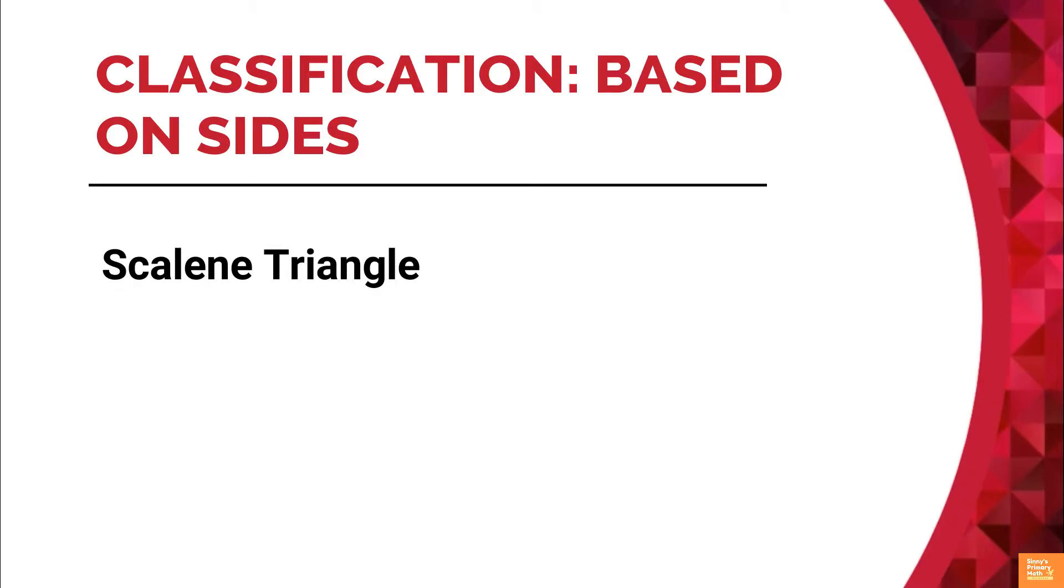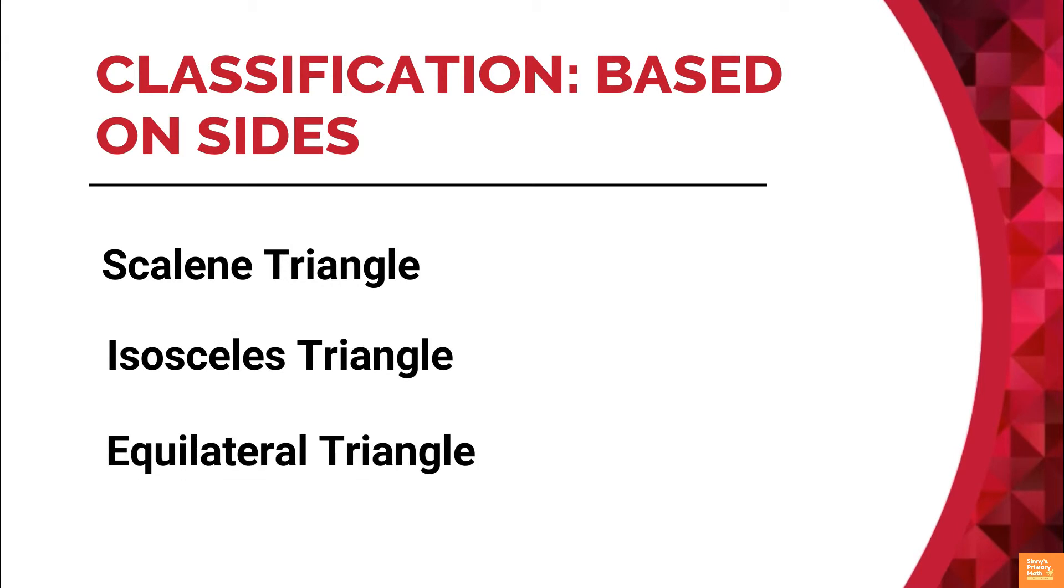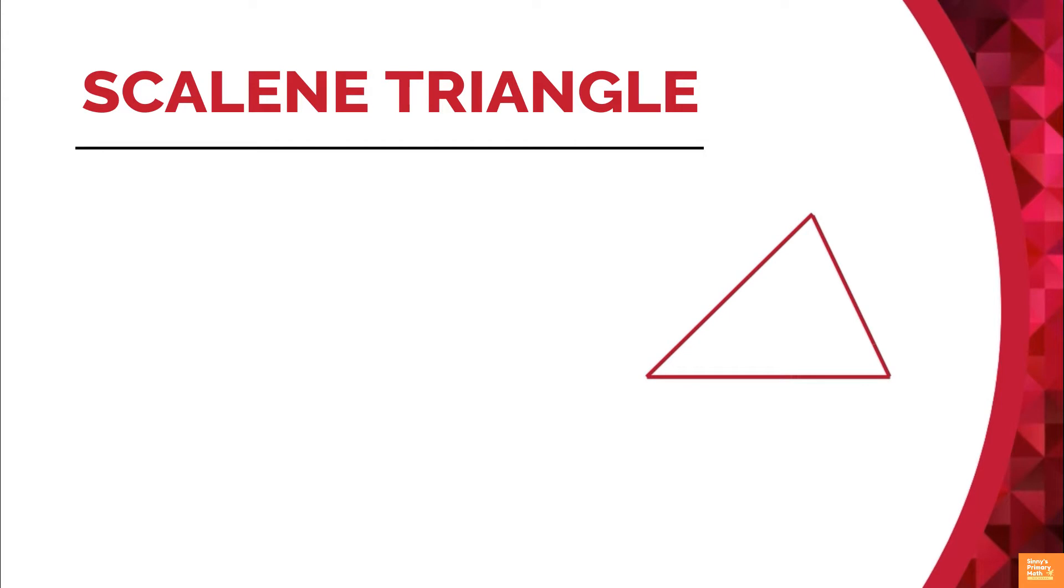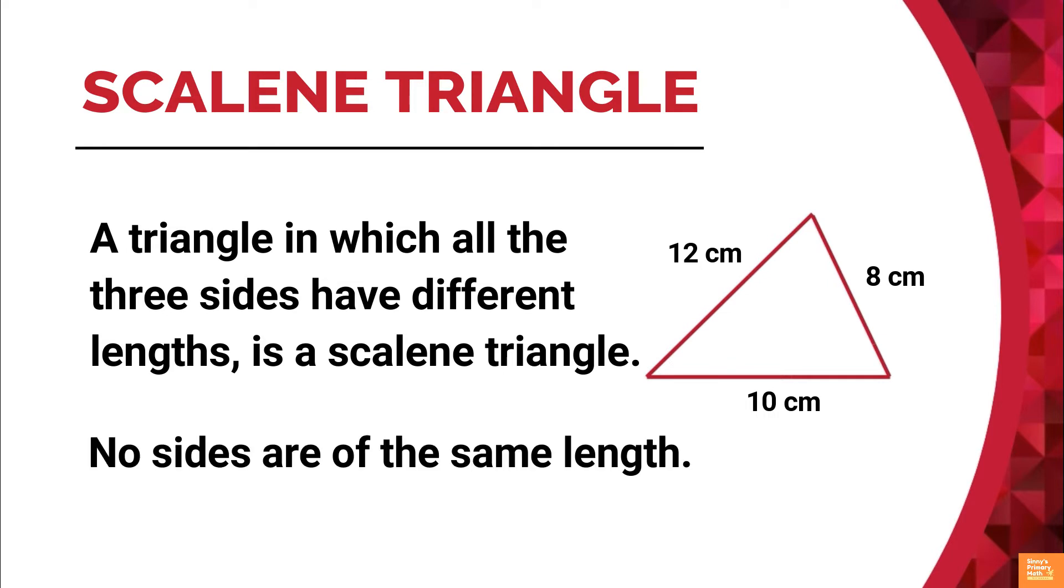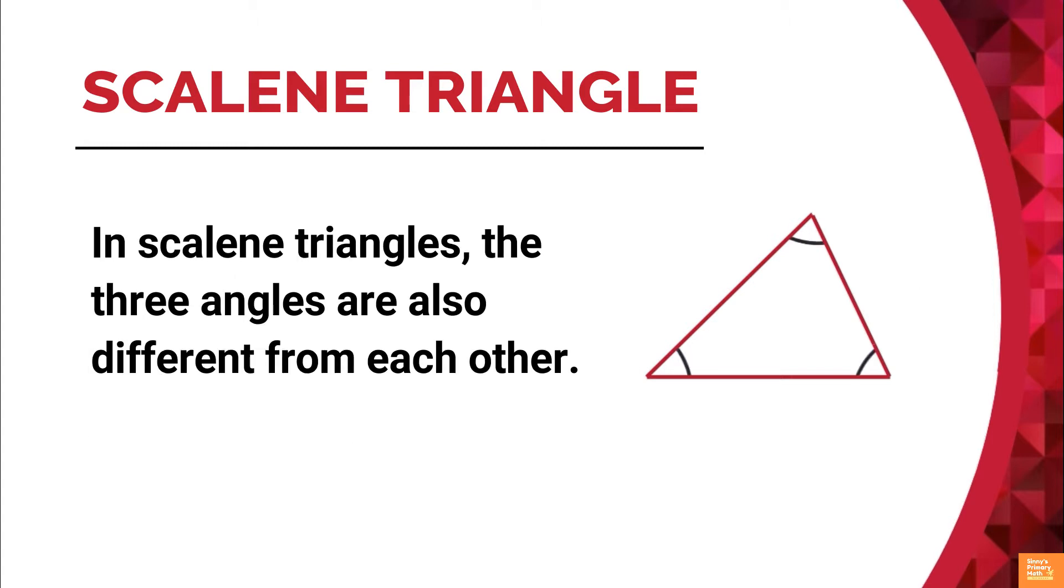There are three different classifications for triangles based on their sides: scalene triangle, isosceles triangle, and equilateral triangle. Scalene triangle: a triangle in which all the three sides have different lengths is a scalene triangle. No sides are of the same length. In scalene triangles, the three angles are also different from each other.